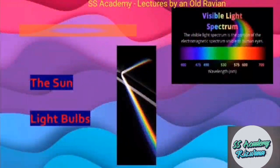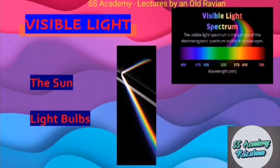Now, visible light. Visible light is produced by the sun and by light bulbs. They are detected by eyes and by photographic films. Their uses are in vision, photography, and photosynthesis.